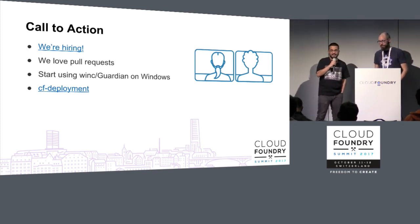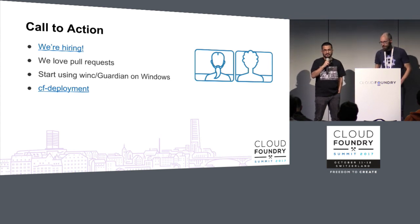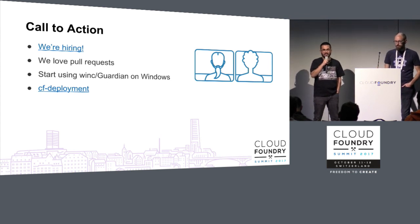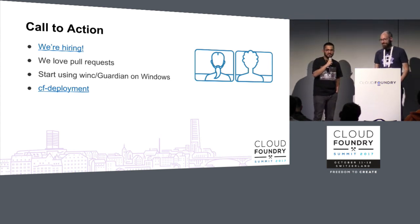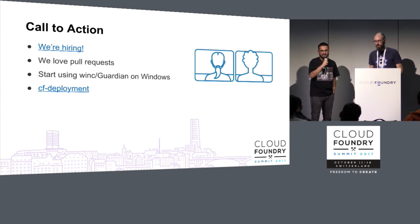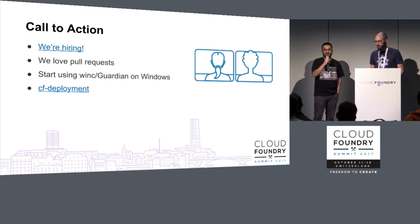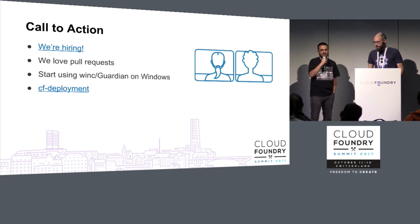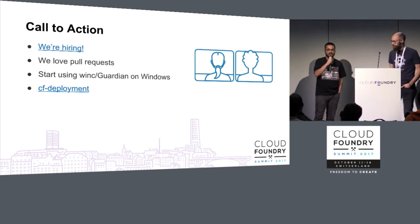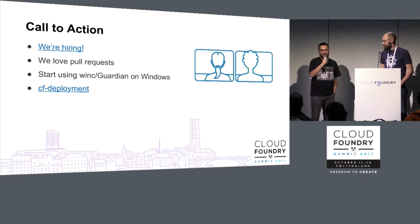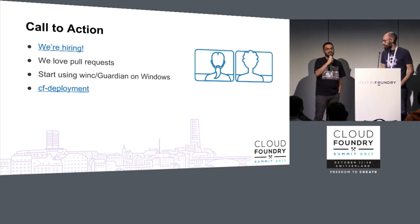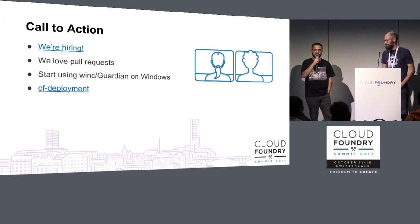Call to action: we are hiring at Pivotal and Cloud Foundry, so give us a call if you want to work on Windows containers. We love pull requests — all of our WinC Guardian code is open source. If you see some bugs, give us a call. Definitely start using WinC Guardian, the Garden WinC release on Windows, and take a look at our CF Deployment ops file, give it a whirl, and see if it works for you. More pull requests are open there as well.